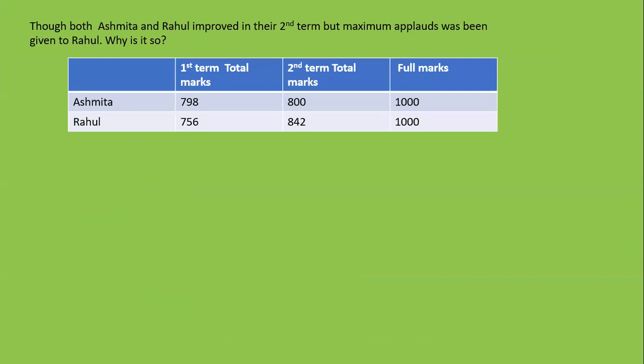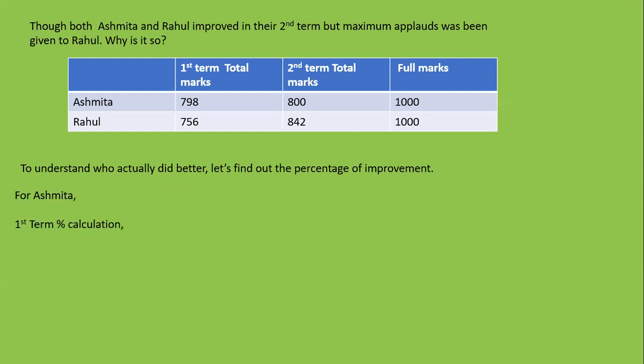Now we look at the first and second term marks of Ashmeetha and Rahul, both calculated out of 1000. Both improved in the second term, but Rahul received the most praise. To understand why, we need to find the percentage of improvement for each student.